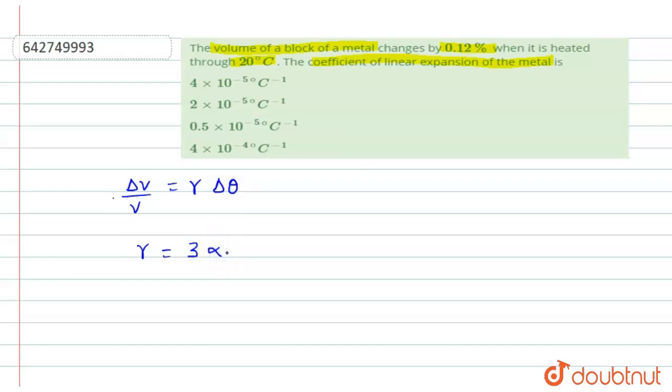So we can use here the value. This will be ΔV divided by V equals 3α × Δθ. Its value is 0.12, and it is in percentage, that's why I am dividing it by 100. And there is 3α we want to calculate. This is 20.